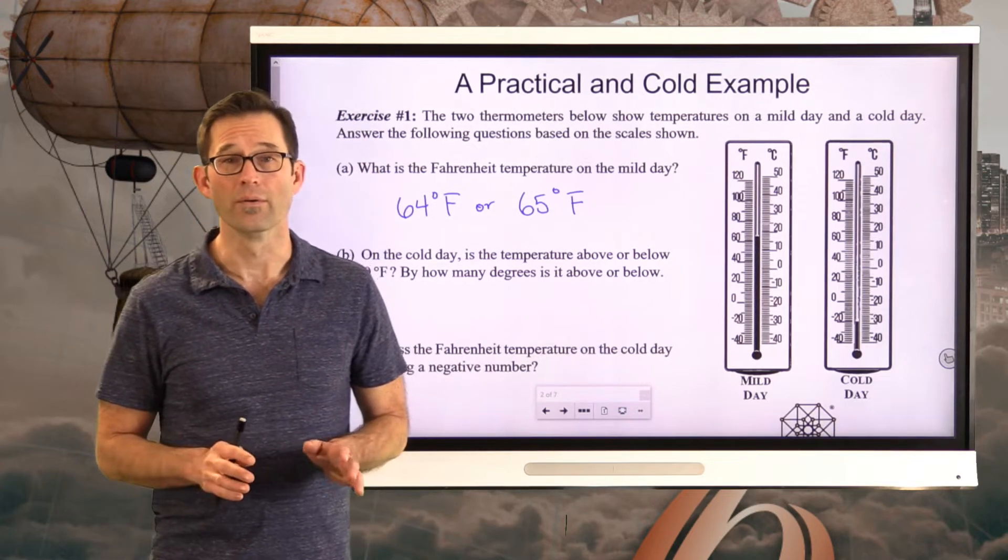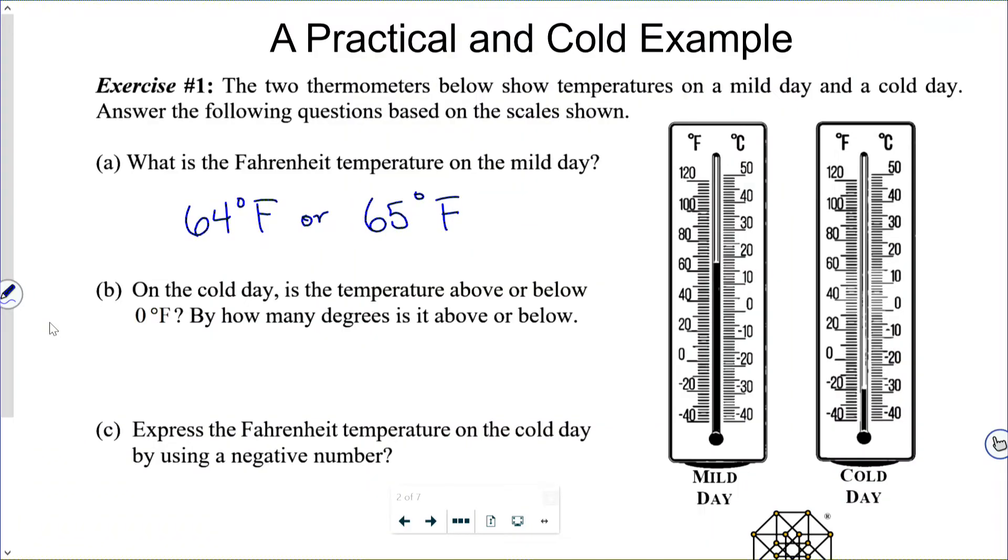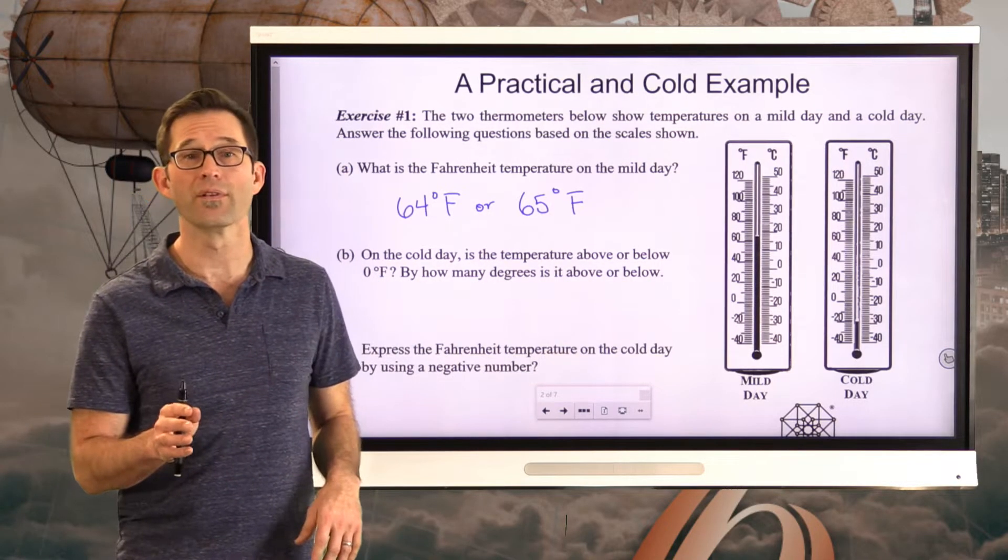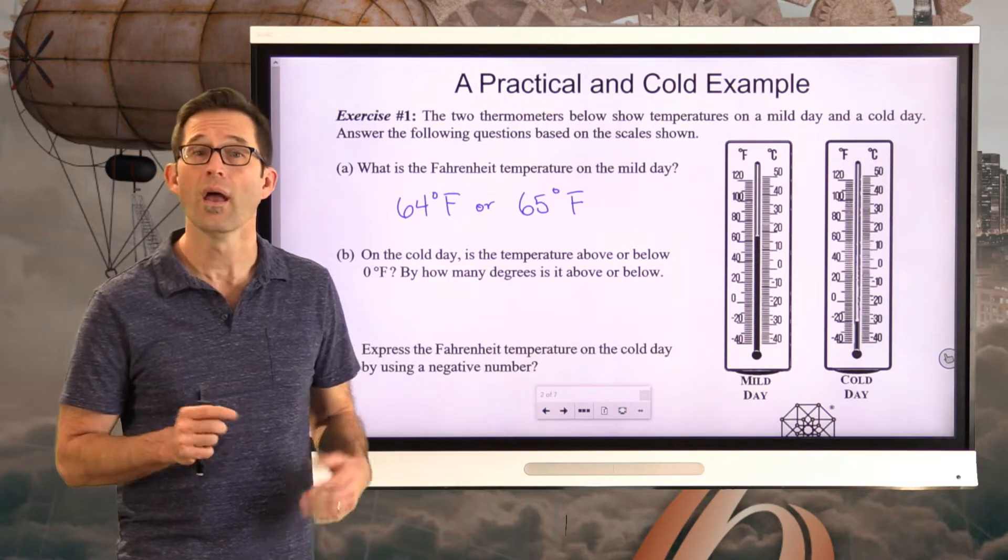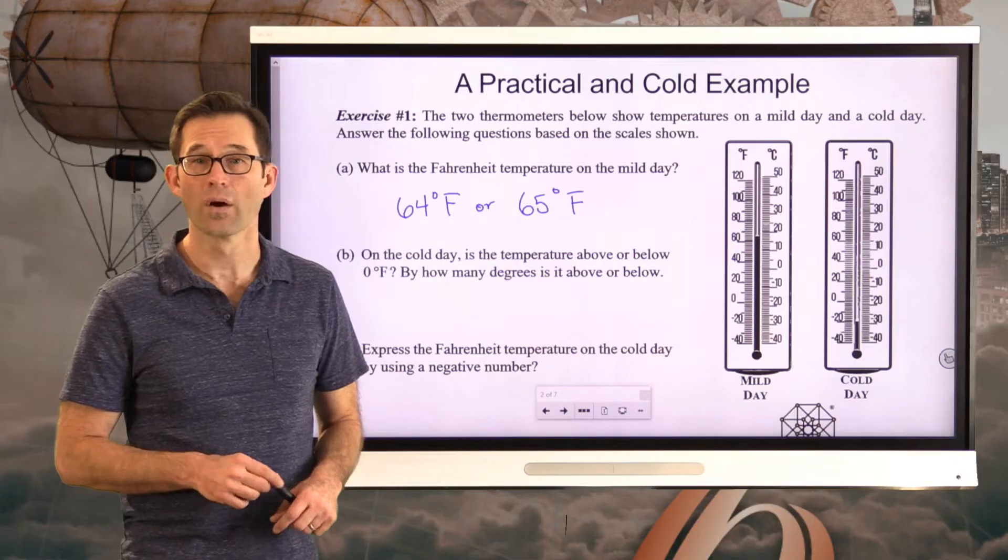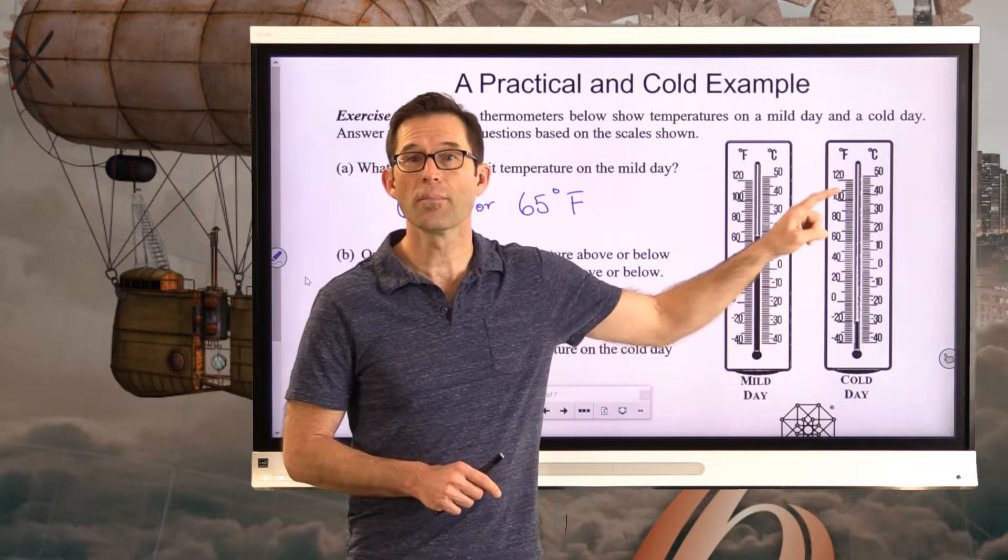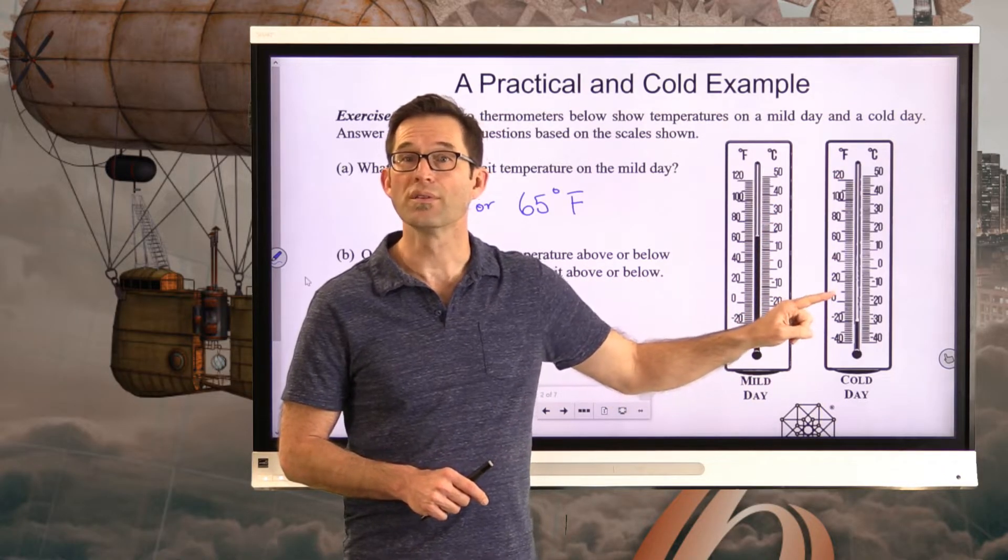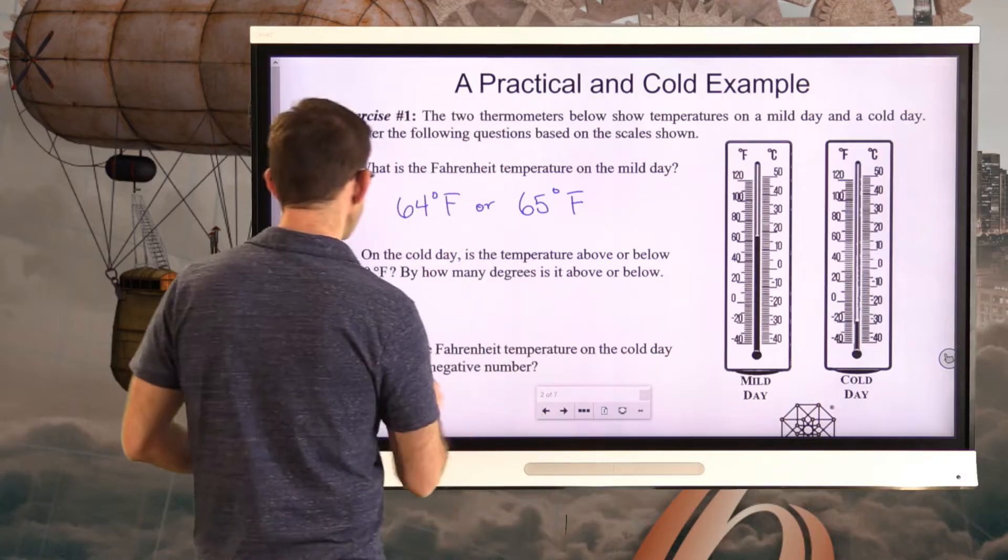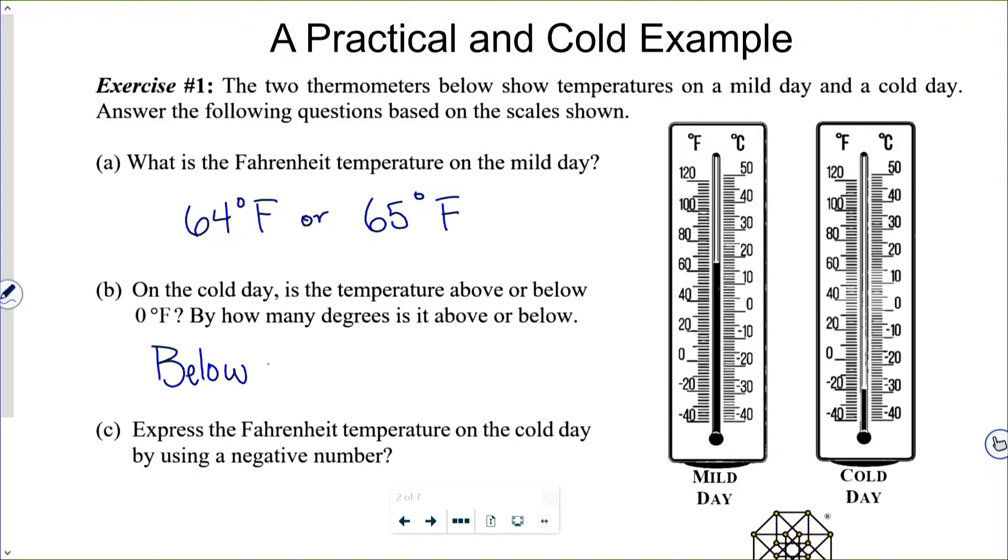Now, letter B, very important. On the cold day, is the temperature above or below zero degrees Fahrenheit? By how many degrees is it above or below? So now we're working on that cold day. I'd like you to take a look at that. Determine whether the temperature is above or below zero degrees Fahrenheit, and then how much it's above or below. Pause the video now. Well, here's the zero. These temperatures are above zero, and these temperatures are below zero. So the temperature is definitely below zero, and it looks like we have to go 20 degrees below zero in order to get our temperature. So it's below zero by 20 degrees.